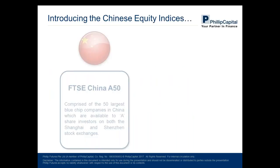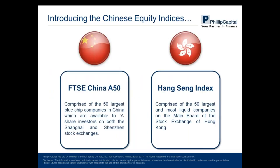I'd like to introduce you to these two Chinese equity indices. The FTSE China A50 comprises 50 constituents made up of the largest blue chip A-shares in China, listed on either the Shanghai or Shenzhen stock exchange. The Hang Seng Index also has 50 constituents, comprised of the most liquid companies on the main board of the Stock Exchange of Hong Kong. Let's start with the FTSE China A50.